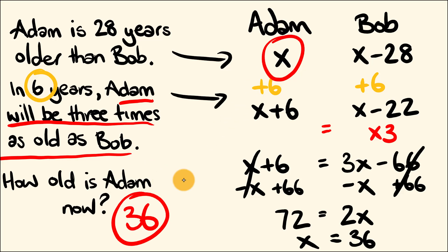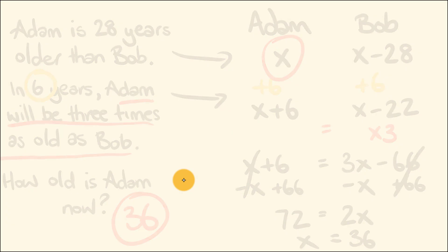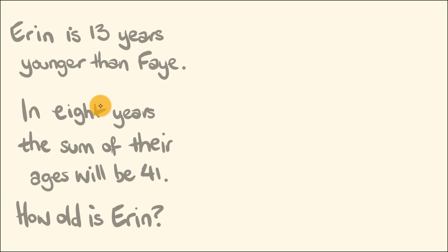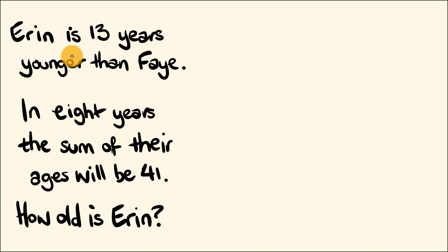So that's how you go through and solve these — build up the equation and then solve. Let's have a look at another example. Aaron is 13 years younger than Faye. In 8 years, the sum of their ages will be 41. How old is Aaron?